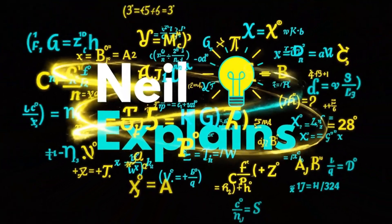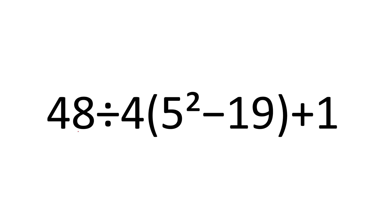Hello everyone and welcome back to Neel Explains. Today we have 48 divided by 4 parenthesis 5 squared minus 19 plus 1. You have 10 seconds to solve this and comment your answer.